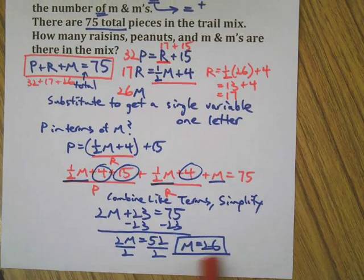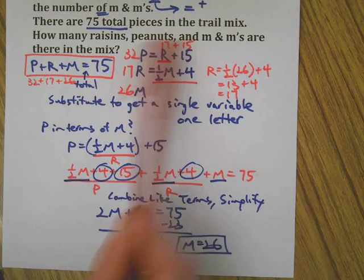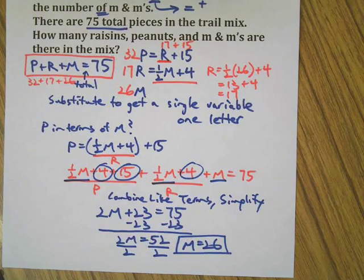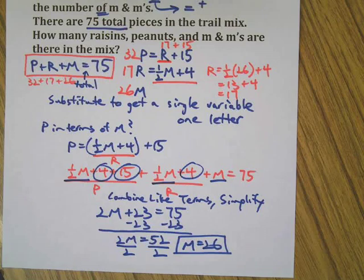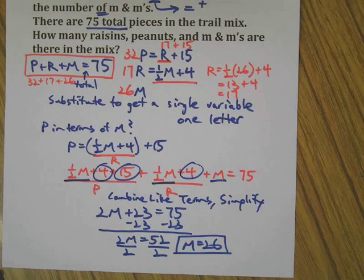That's how you solve a problem like this: we decide on some variables, write some equations that describe how the things relate to each other, then use substitution to get a single variable, to get one letter. And then once we have the solution to the one letter, we substitute that back up into some of our original equations, just like a Sudoku puzzle. Here's another problem for you to do by yourself.